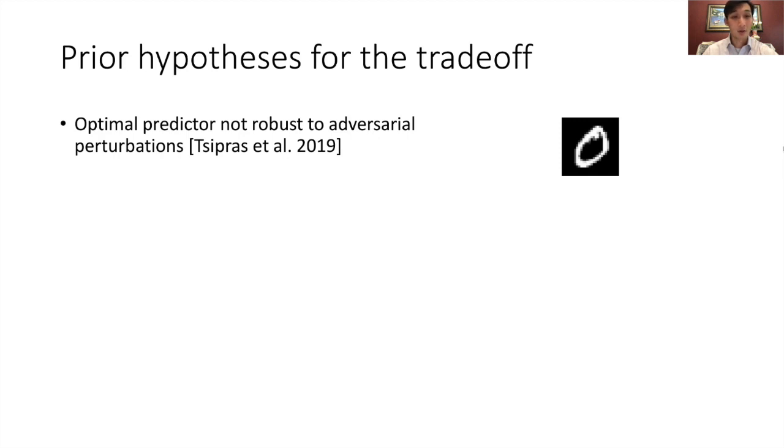For example, if the adversary could perturb the image of a 0 to a 9, the classifier would have to pick between accuracy, which would say that the image is actually a 9, versus robustness to perturbations, which would want to keep the original label, which is 0.